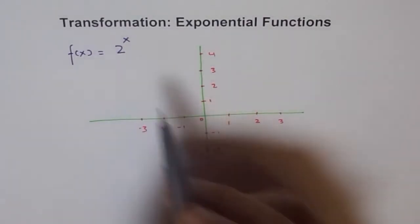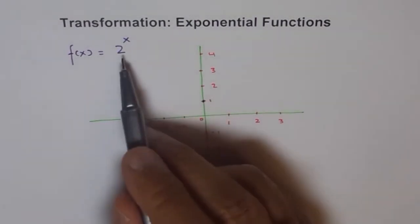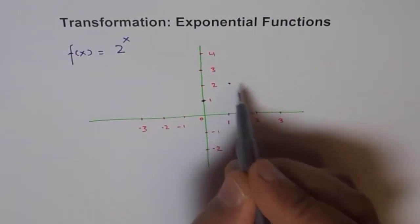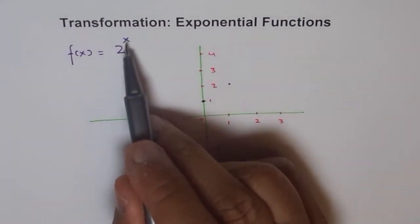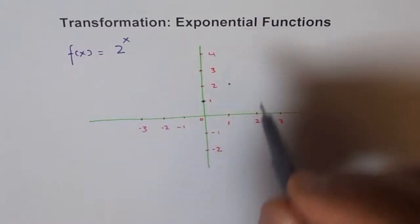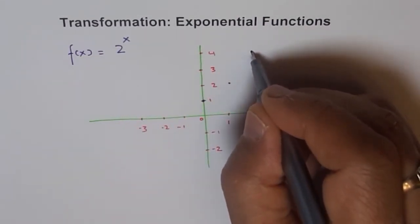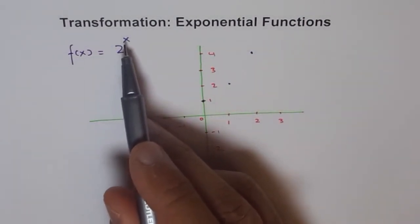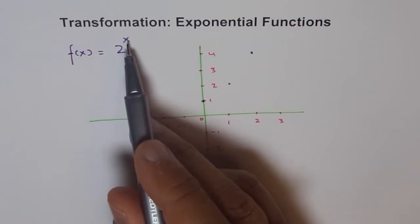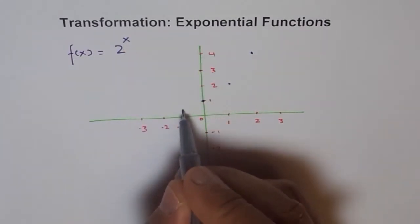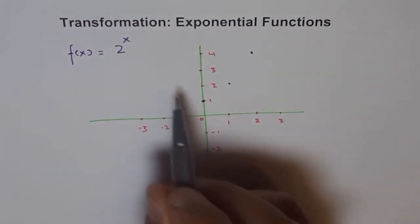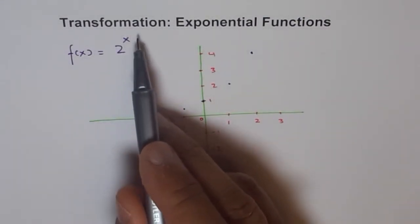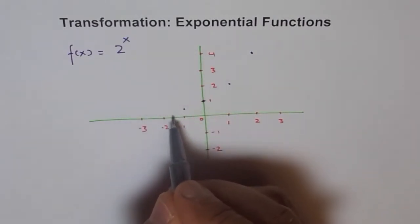If x = 0, then 2^0 = 1, so we get this point. If x = 1, then 2^1 = 2, so at x = 1 we get a value of 2. If x = 2, then 2^2 = 4, so at x = 2 we get value 4. When x = -1, we get 2^(-1) = 1/2, that's one-half. When x = -2, it is 1/2^2 = 1/4, so one-fourth.